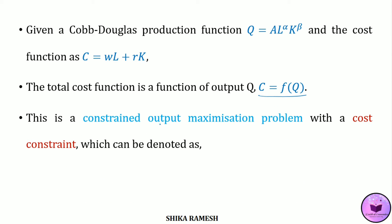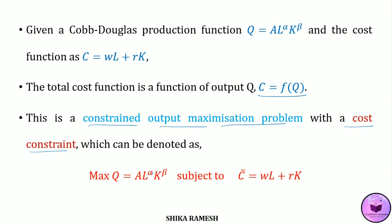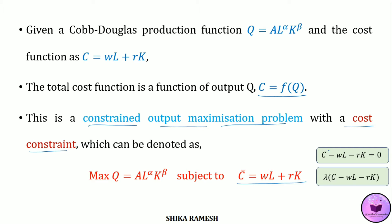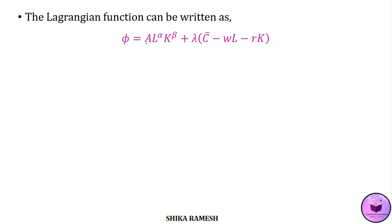Clearly we can see that this is a constrained output maximization problem — that is, maximizing the output given a cost constraint. This optimization problem can be symbolically written as: maximize q = A·L^α·K^β subject to the cost constraint C̄ = wL + rK. Since this is an optimization problem, we will be using the Lagrangian multiplier to solve this. We equate the cost constraint to zero, multiply it with the Lagrangian multiplier λ, and add it to the objective function, giving the Lagrangian: φ = A·L^α·K^β + λ(C̄ - wL - rK).